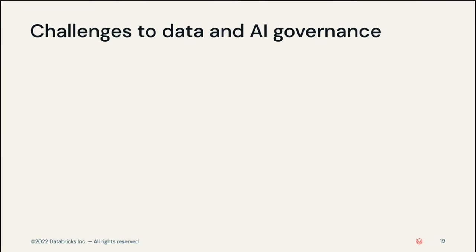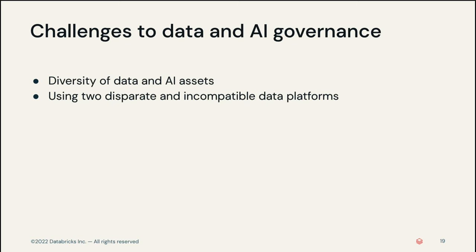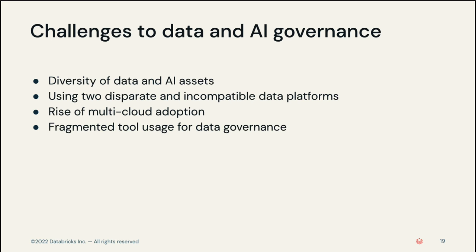There are several challenges to data and AI governance, such as the diversity of data and AI assets — as data takes many forms beyond files and tables to complex structures such as dashboards, machine learning models, videos, or images. The use of two disparate and incompatible data platforms, where past needs have forced businesses to use data warehouses for BI and data lakes for AI, resulting in data duplication and unsynchronized governance models. Additionally, the rise of multi-cloud adoption and fragmented tool usage introduce complexity, multiple integration points, and poor performance.